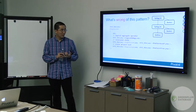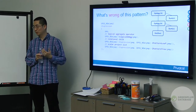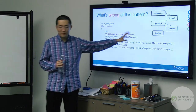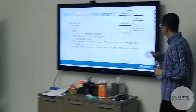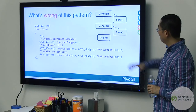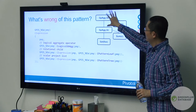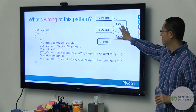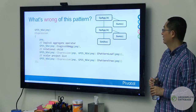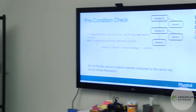If we only have the pattern, we only solve part of the problem. The other issue is when to kick in this rule. If we already have a plan that's been split, what happens? It would keep splitting infinitely. So we need a precondition saying I'll only apply this rule if a certain condition is met — that's the precondition check.